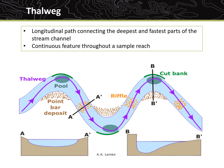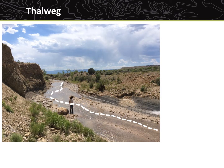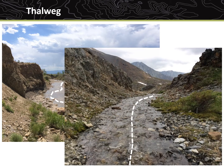Thalweg is the longitudinal path connecting the deepest parts of the stream channel and is used in measuring the heterogeneity of the streambed's morphology. Thalweg is defined by the location laterally across a stream that has the deepest and fastest moving water, and is a continuous feature throughout the sample reach. In meandering systems, the thalweg alternates between left and right bank. In riffles, where the thalweg crosses from left to right bank or vice versa, it is usually found in the center of the riffle.